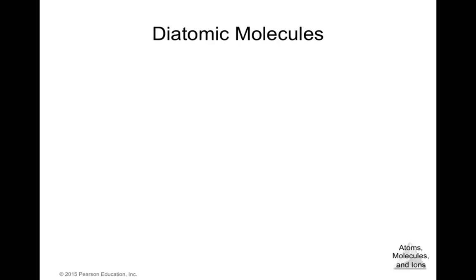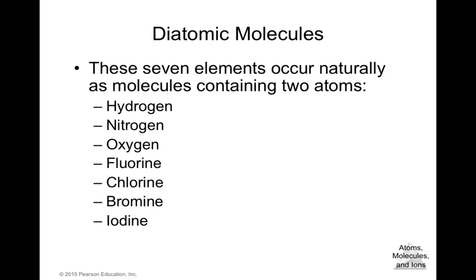There is a group of diatomic molecules that occur naturally: hydrogen (H₂), nitrogen (N₂), oxygen (O₂), fluorine (F₂), chlorine (Cl₂), bromine (Br₂), and iodine (I₂). These molecules exist as diatomic because they naturally contain two atoms in each molecule.